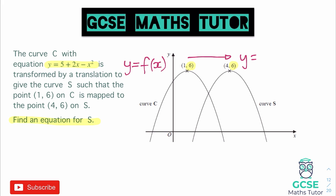Hopefully you remember with a graph transformation — and if you're not sure on these, I'll link the full video in the description for you to have a look at — when we move to the right, that is a minus after the x. So we're going to put x minus the distance we've moved it, so x minus 3. So if y equals f of x, then y equals f of x minus 3 would translate the graph three spaces to the right.